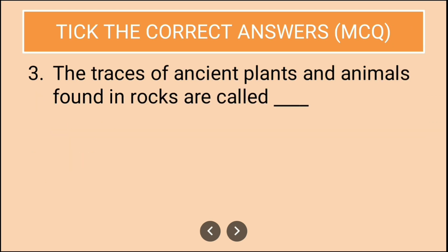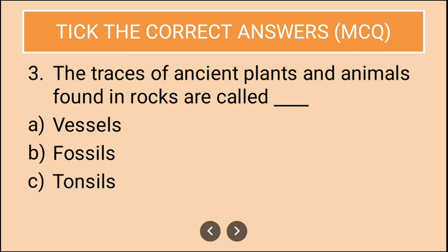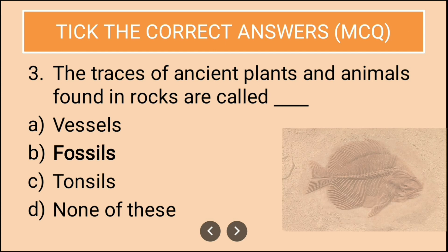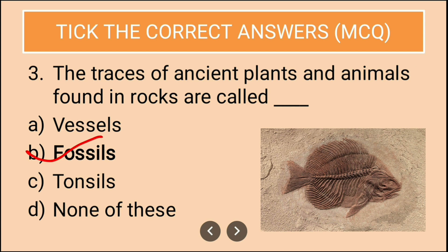Question three: The traces of ancient plants and animals found in rocks are called — options are vessels, fossils, tonsils, none of these. The correct answer is B, fossils. These are the traces of ancient plants and animals found in rocks.